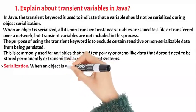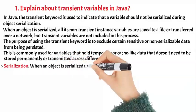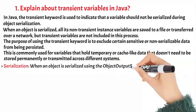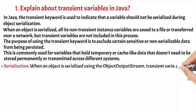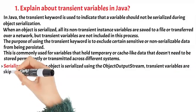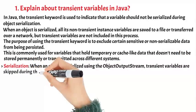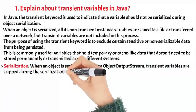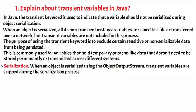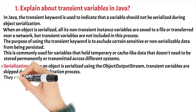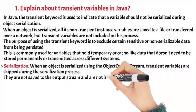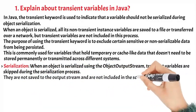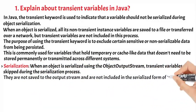When an object is serialized using the ObjectOutputStream, transient variables are skipped during the serialization process. They are not saved to the output stream and are not included in the serialized form of the object.